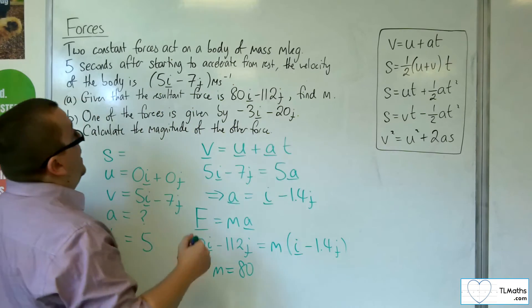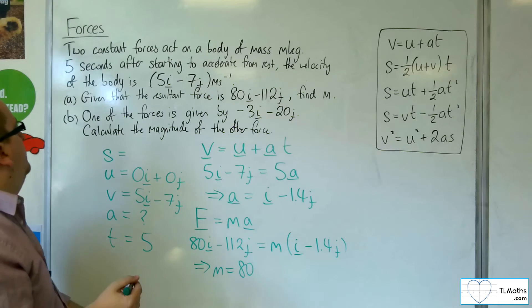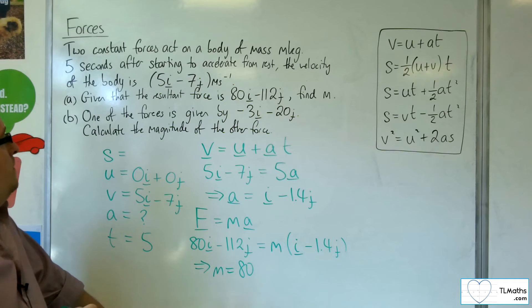So we have 80 kilos. That is the mass of the body. So now, one of the forces is given by minus 3i minus 20j. Calculate the magnitude of the other force.